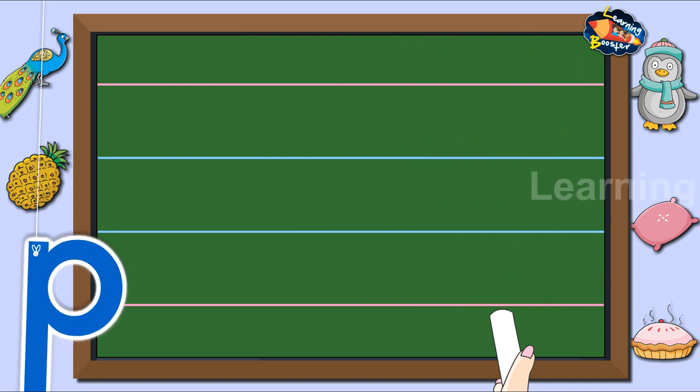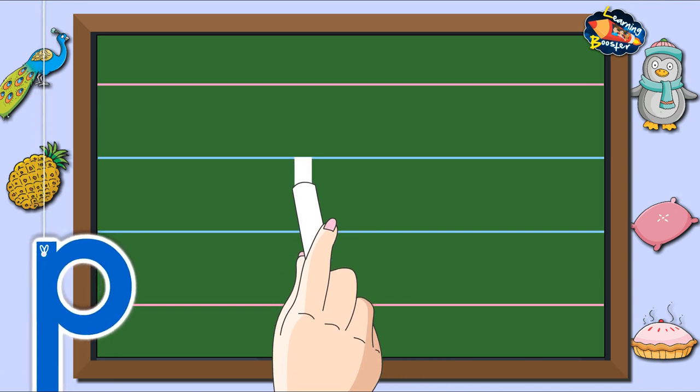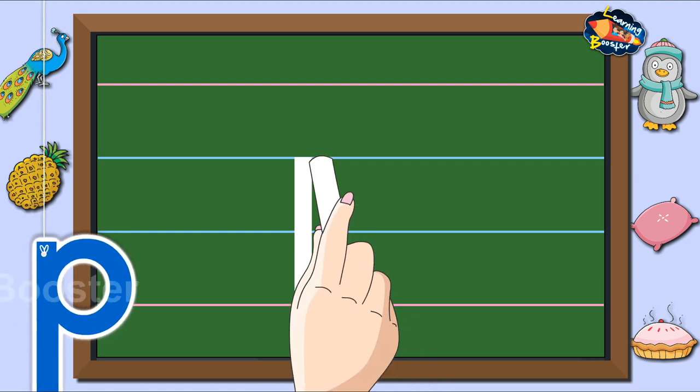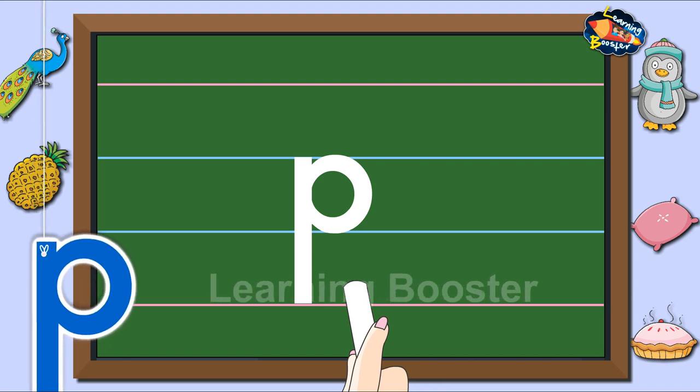Letter P. Start from the waistline and make a standing line till the tail line. Then go to the waistline and make a curve to the right till the waistline.